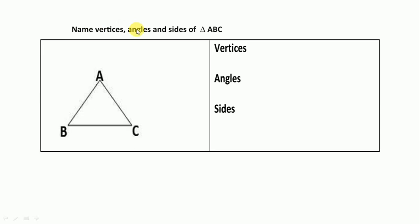Next one is name the vertices, angles, and sides of triangle ABC. So vertices are A, B, and C. Angles are ABC, we write angle A, angle B, and angle C. Sides we start from AB, the sides are AB, BC, and CA.